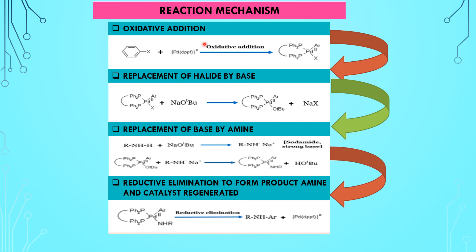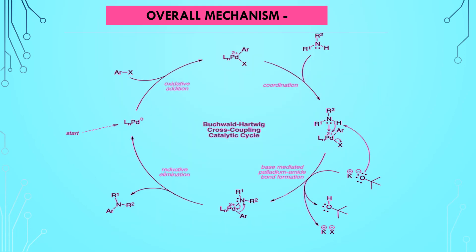This is the overall mechanism of the Buchwald-Hartwig coupling reaction. To revise: the first step is oxidative addition, second is replacement of the halide by the base, third is replacement of the base by the amine, and the last step is reductive elimination.